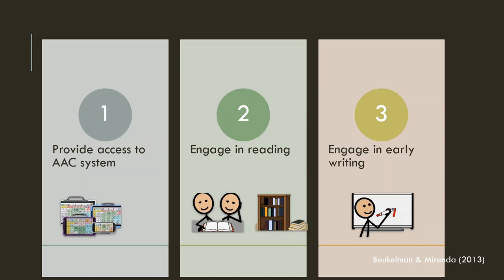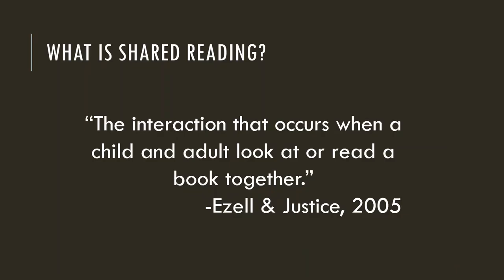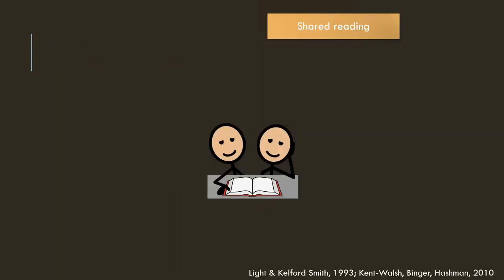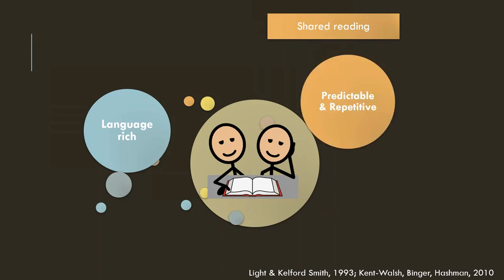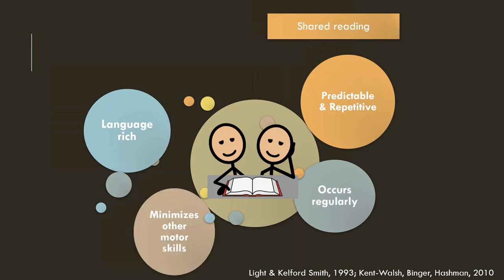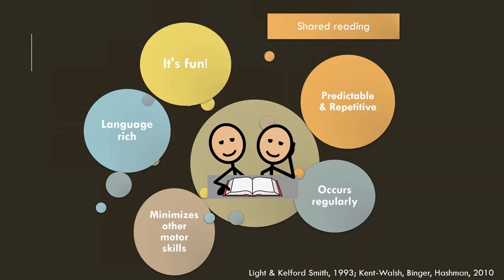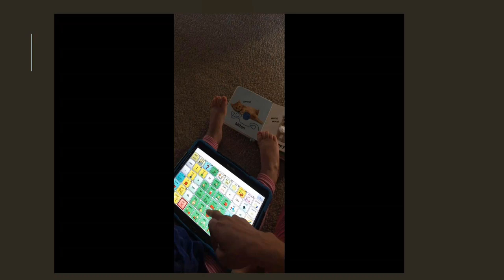The next step in fostering emergent literacy is to engage in shared reading and to make that reading available. Shared reading is exactly what it sounds like — it is the time for sharing a story and reading together, as well as the time for teaching beginning reading concepts in a safe and fun environment. Shared reading has been long recommended as a rich context to support the language development of children who are pre-literate or have emergent literacy skills. Books are predictable and repetitive, book reading may take place regularly in the home, it minimizes other motor skills, and it's just fun. We're going to take a look at what shared reading might look like with AAC.